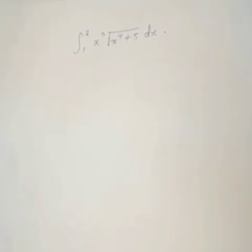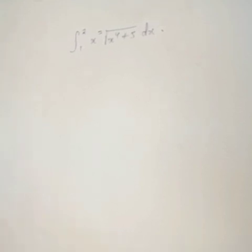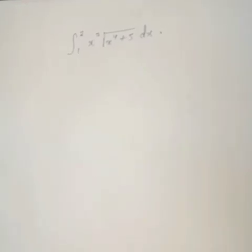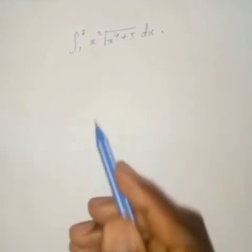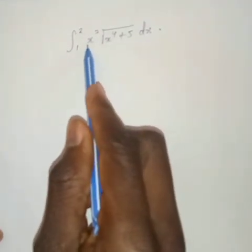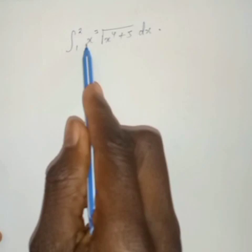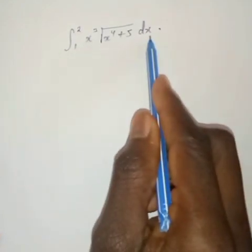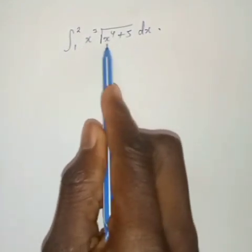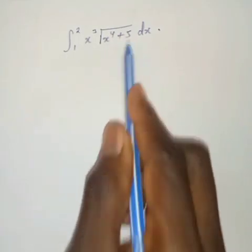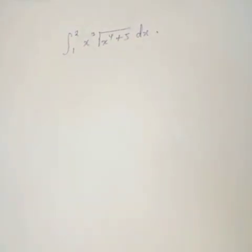The method we are going to use here is the substitution method. When it comes to substitution method, you need to choose a part that you are going to differentiate. Once you differentiate, it must cancel out with a certain thing. The only thing which can be cancelled is when you move the x³ to the other side, and then differentiate the part which is inside.